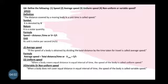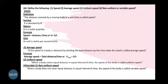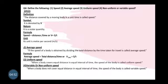Now, average speed: if the speed of a body is obtained by dividing the total distance covered by the time taken for travel, it is called average speed. That is, however much distance you cover and however much time you consume to cover that distance, the speed obtained is the average speed. Its formula is: average speed = total distance divided by time.